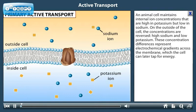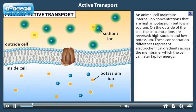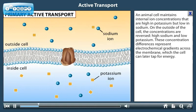An animal cell maintains internal ion concentrations that are high in potassium but low in sodium. On the outside of the cell, the concentrations are reversed, high sodium and low potassium. These concentration differences represent electrochemical gradients across the membrane, which the cell can later tap for energy.